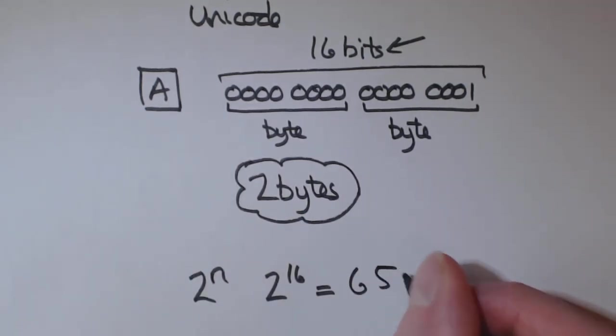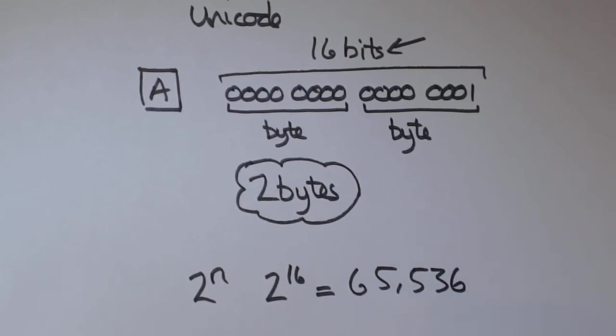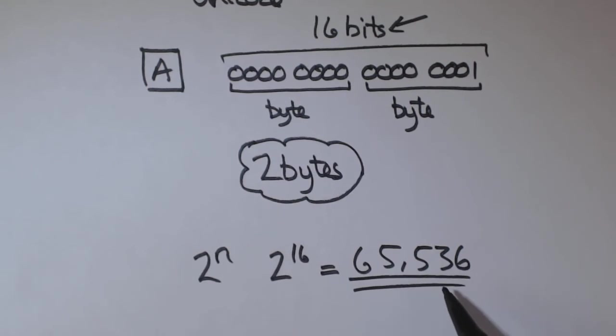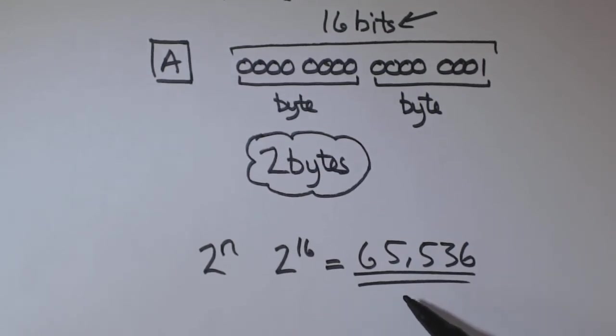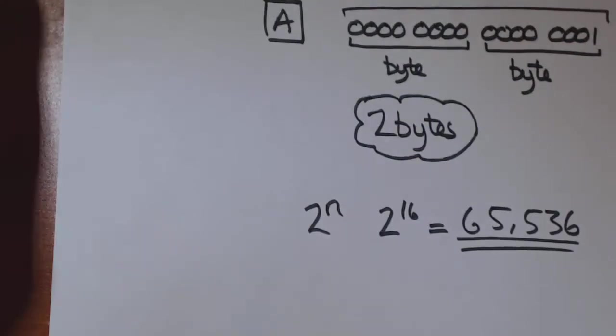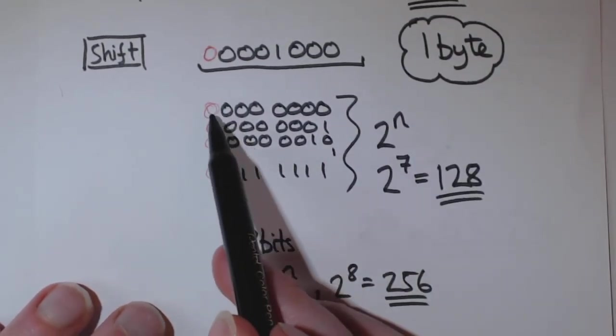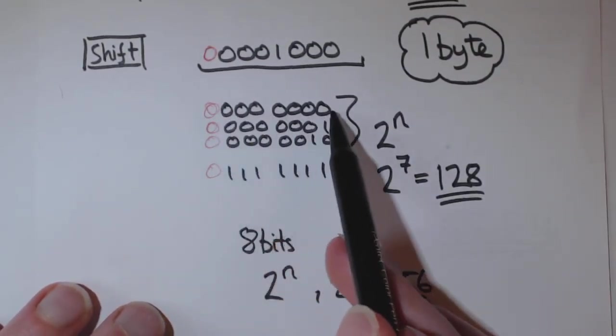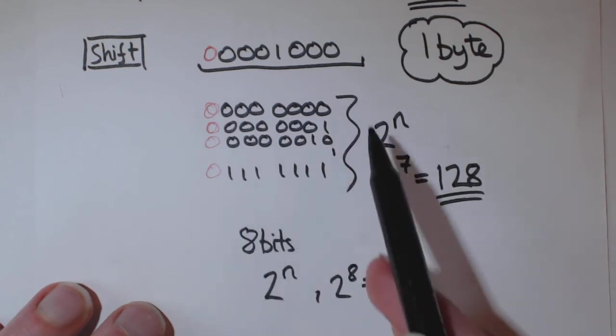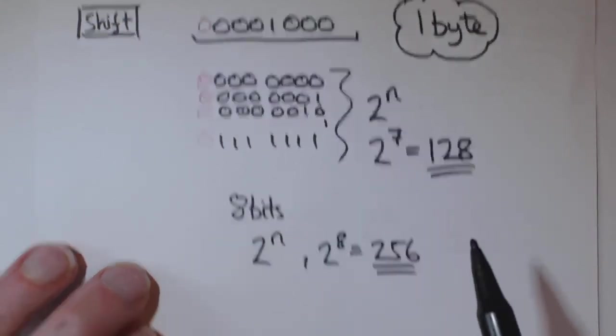65,536. That's the number of characters you can use or represent using Unicode. And again, just as I did here, saying you could have all the different combinations, 7 zeros all the way to 7 ones. How many combinations? Which is 128.